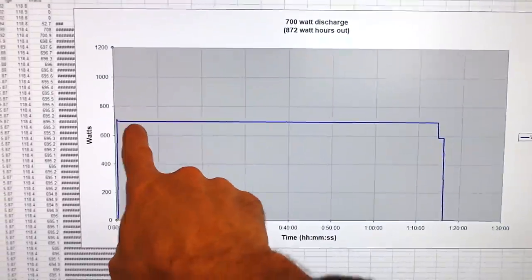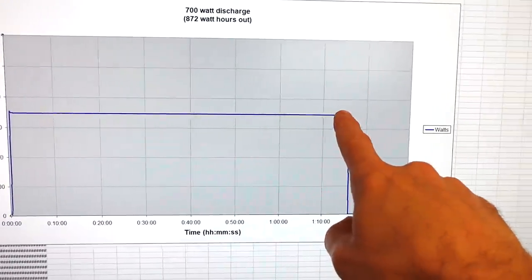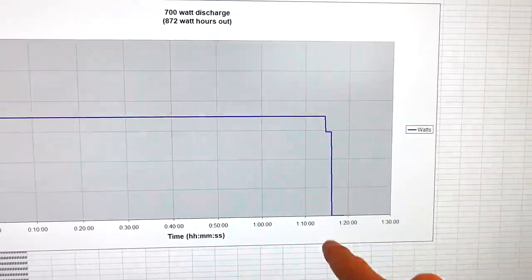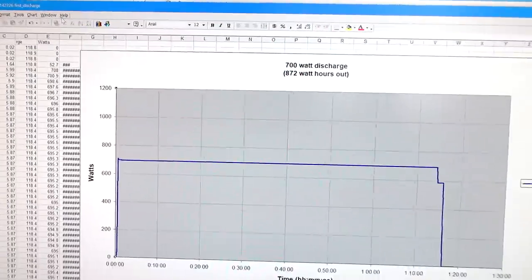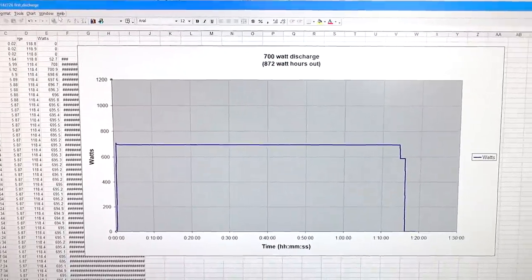Graphing the data, it held steady at around 700 watts until near the end when it dropped the voltage a bit as it was running out of power. We got a total of 872 watt-hours out but the battery pack is supposed to be 1024 watt-hours.